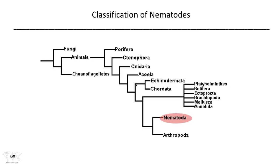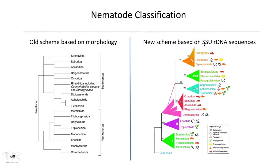Nematodes are classified as animals and eukaryotes, and they have their own phylum: Nematoda. Nematode classification in the old days — back in Linnaeus' time, up until the modern era of genomics — was based entirely on morphology and life cycles. But today we have another way of looking at life. The new scheme is based on small subunit ribosomal DNA that encodes the small subunit for ribosomes. If we take that sequence and reclassify all nematodes, they fall out into different groups — not significantly different from the morphological ones, but different enough to make a difference.